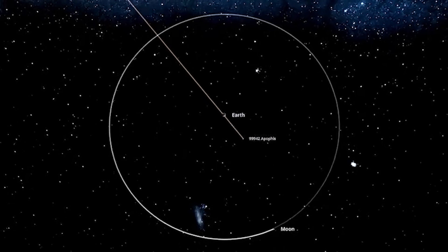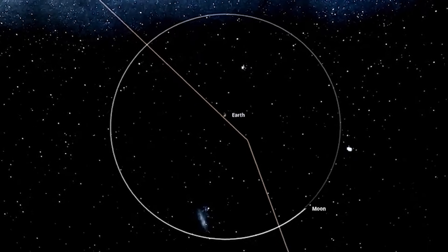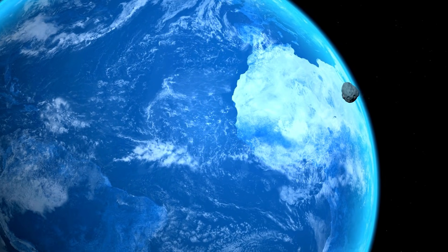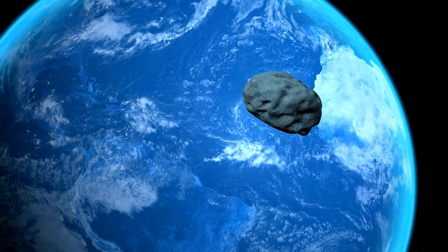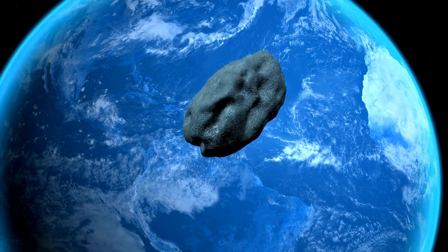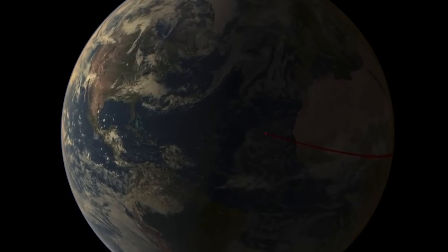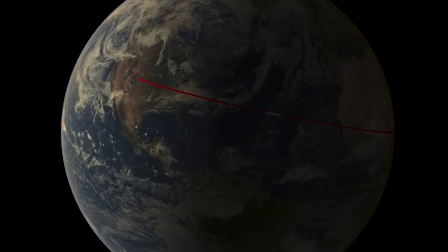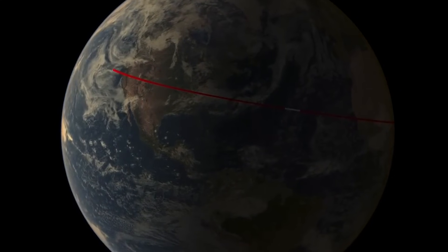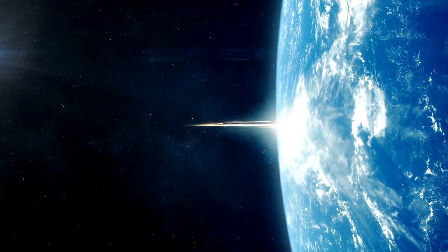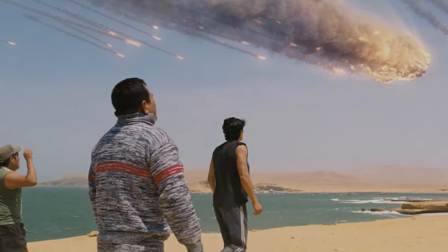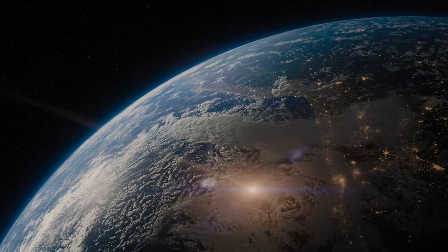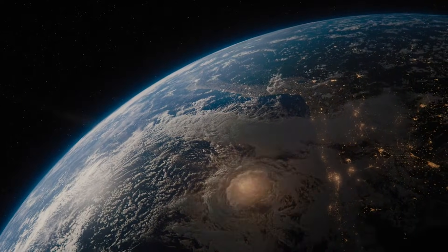Apophis could, hypothetically, enter something scientists call a gravitational keyhole. Strange, right? And what exactly is that? A gravitational keyhole is a small region of space where Earth's gravitational pull could alter Apophis's trajectory in a very dangerous way. Imagine a slightly open door where, if the asteroid passes exactly through the right point, its path could be redirected directly towards us in a future pass. Now the lingering question: are we at the mercy of an inevitable collision? What can we do to prevent an asteroid of this size from hitting the planet? This possibility is scary, but the strangest thing of all is that we don't know for sure what will happen.